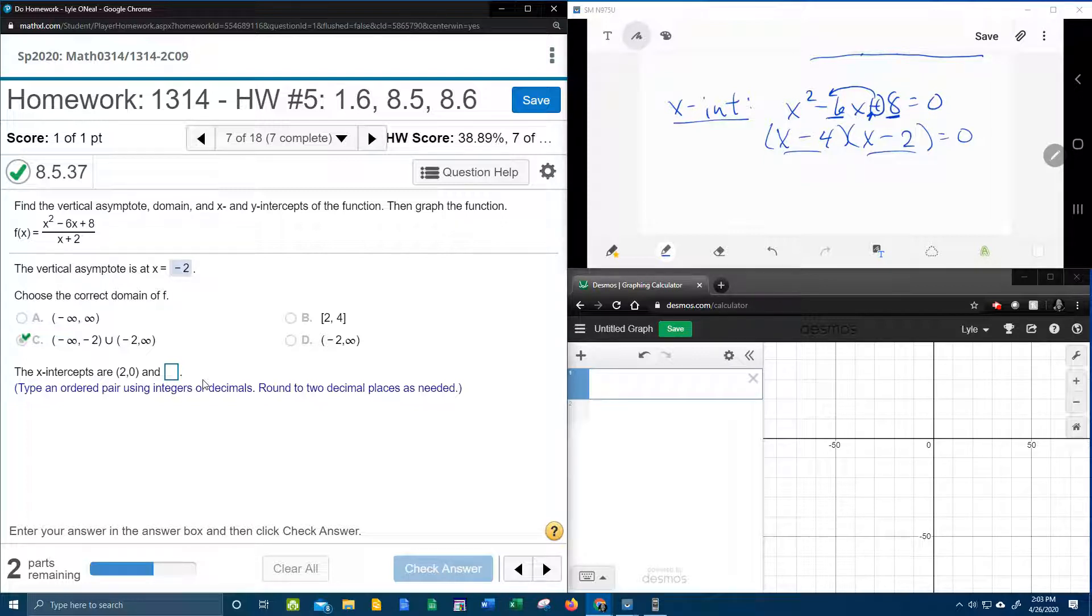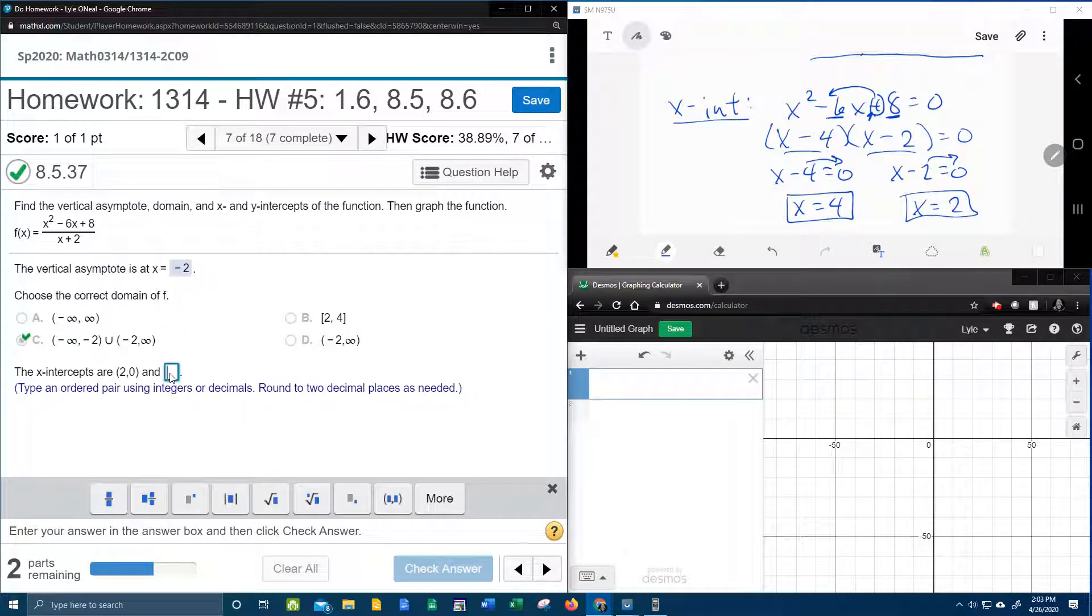And so then if I set each factor equal to 0, and solve x equal to, notice that this is the x-intercept over here, they already gave me that one. Doing the other x-intercept, if I move the minus 4 over, x equal 4 is the other x-intercept, and it does need to be written as an ordered pair. So just so you know, an x-intercept always has a y-coordinate of 0.